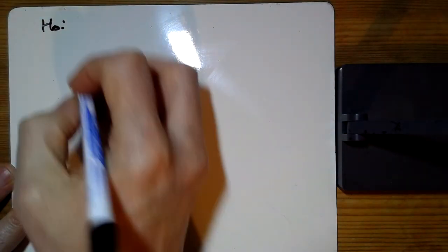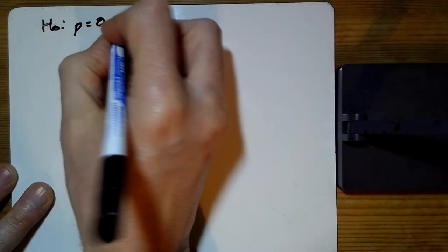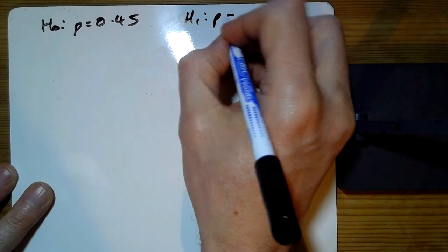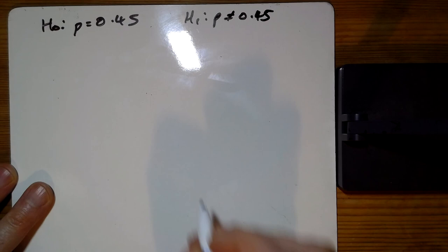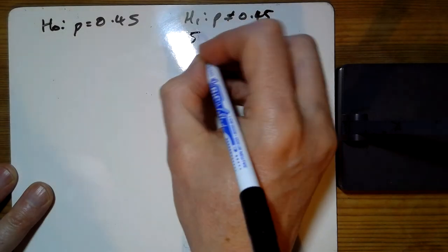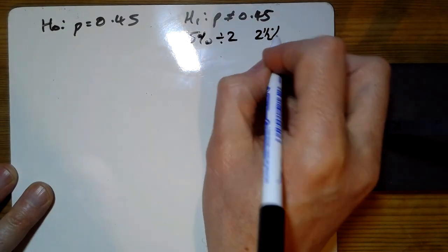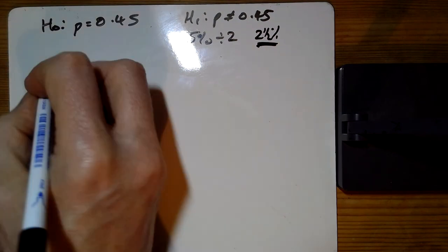So for question 3 we've got another binomial. H0 is p equals 0.45 and H1 is p does not equal 0.45. In this case we have a 5% test but it's a two-tailed test, so we're going to be looking for 2.5% at each end.